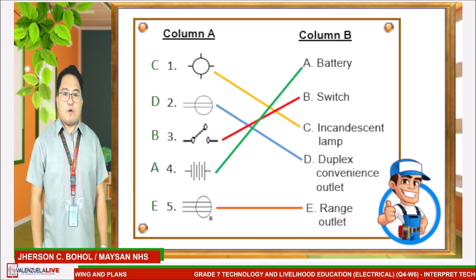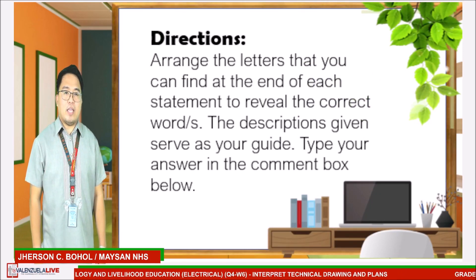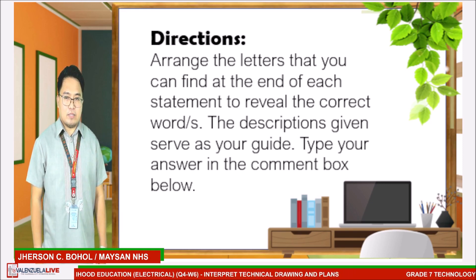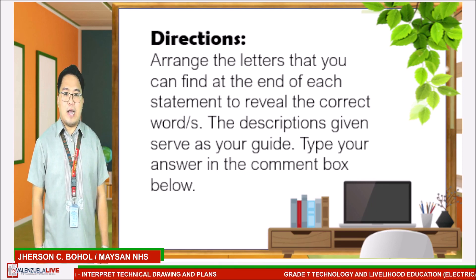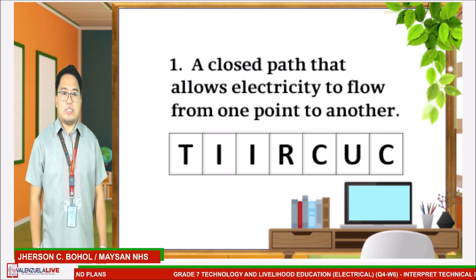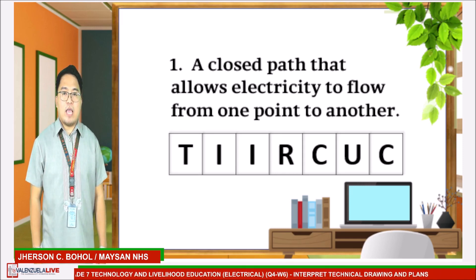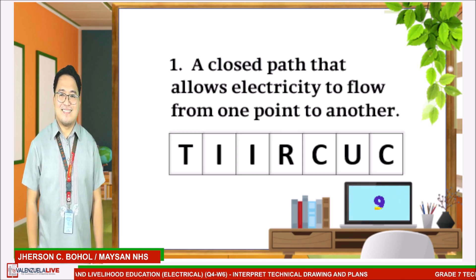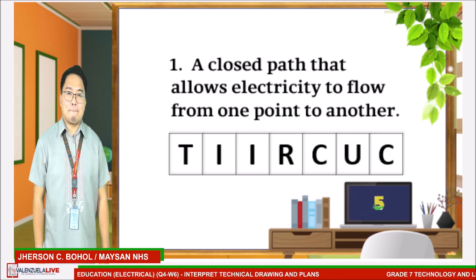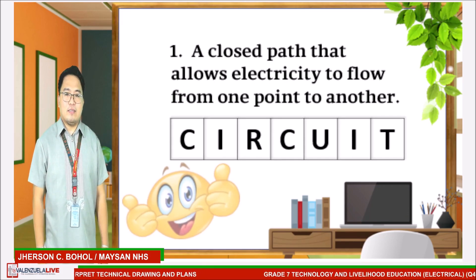Very good, learners. Before we proceed to our discussion, let me check your prior understanding about the topic. Let's have one more activity. You have to arrange the letters found at the end of each statement to reveal the correct words. The descriptions will serve as your guide. Type your answer in the comment box below. Number one: a closed path that allows electricity to flow from one point to another. The letters are T-I-I-R-C-U-N-C. If you answered 'circuit,' you are correct.